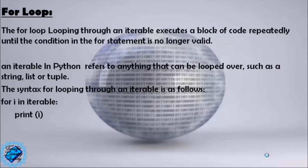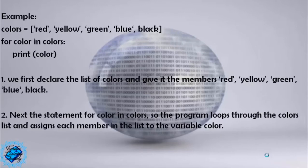Hello and welcome everybody to this lecture of our course Master Python for Data Analysis. A for loop, looping through an iterable, executes a block of code repeatedly until the condition of the for statement is no longer valid. An iterable in Python refers to anything that can be looped over, such as a string, list, or tuple. The syntax for looping through an iterable is: for i in iterable: print(i).